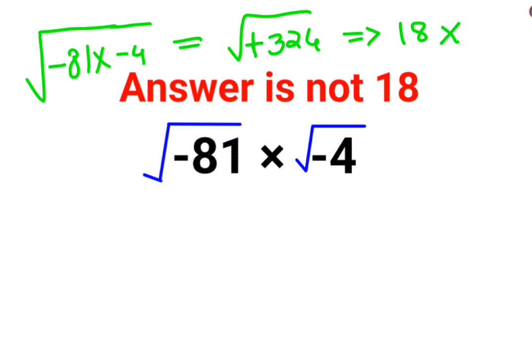Please understand, whenever you have a negative sign in a root, you have to take 81 and this negative sign has to be done as minus 1. Similarly, the 4 has to be written as it is, and then you multiply the 4 with root of negative 1.